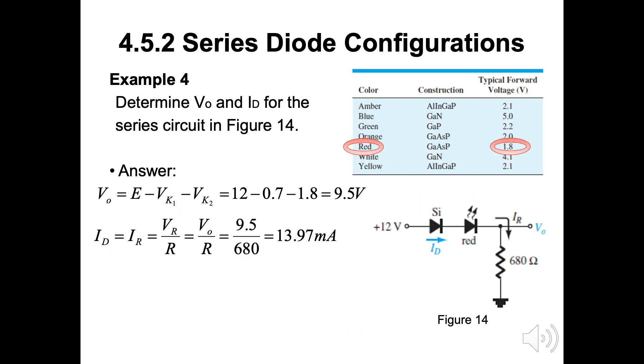Example 4, determine V0 and ID for the series circuit in figure 14. V0 is parallel with VR. Then we can find the V0 by E minus both diode silicon is 0.7V and red LED is 0.8V and will get 9.5V. For ID, as it is equal to IR, VR divide R will be 13.97mA.